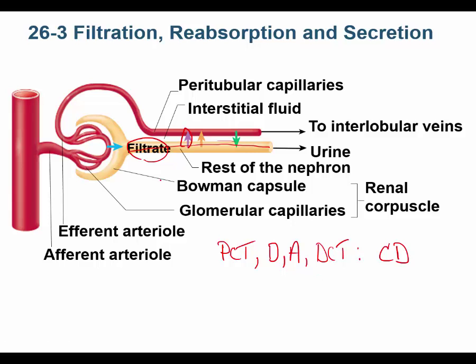What happens is we reabsorb — we take things that were filtered that are good for our body and reabsorb them back into the bloodstream. Water and solutes are reabsorbed. In fact, we reabsorb 99% of our water. You make about 200 liters of filtrate a day, but only about two liters of urine a day, meaning you've reabsorbed 99% of that volume.